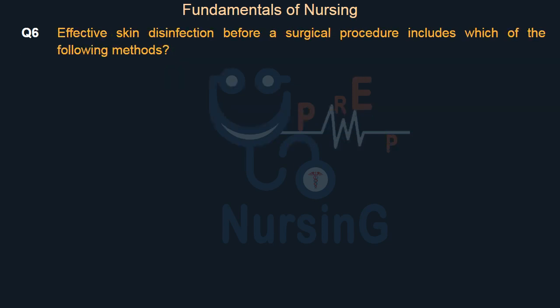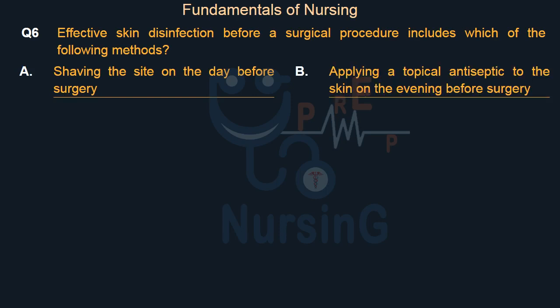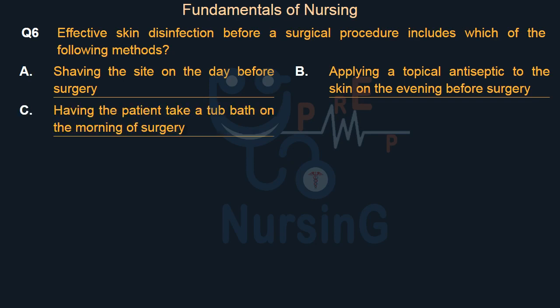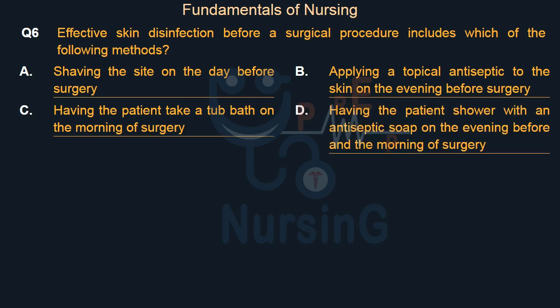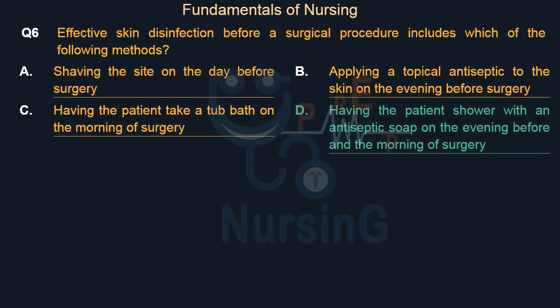Effective skin disinfection before a surgical procedure includes which of the following methods? Option A: Shaving the site on the day before surgery. Option B: Applying a topical antiseptic to the skin on the evening before surgery. Option C: Having the patient take a tub bath on the morning of surgery. Option D: Having the patient shower with an antiseptic soap on the evening before and the morning of surgery. Right answer is Option D.